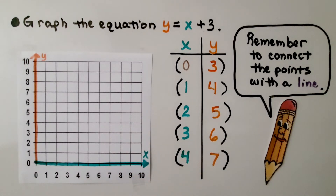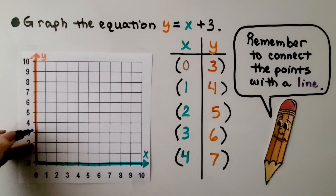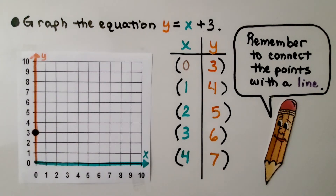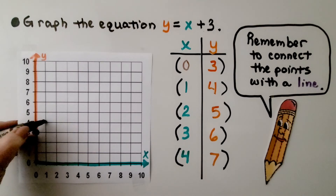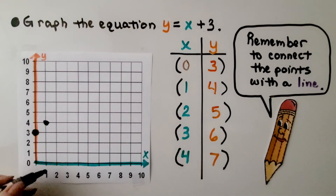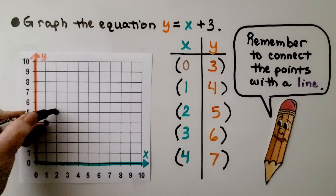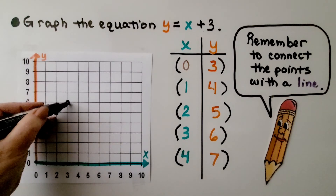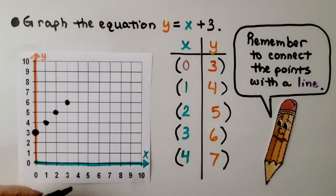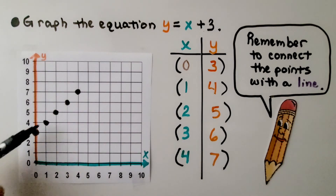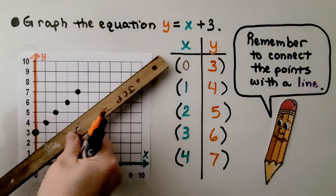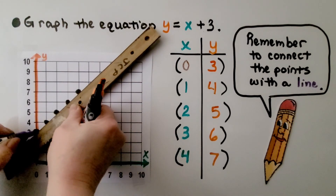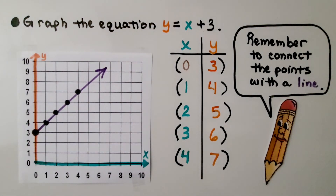We can plot these points. 0 for x and 3 for y is right here. Then 1 for x and 4 for y, right here. Then 2 for x and 5 for y, right here. Then 3 for x and 6 for y, here. And 4 for x and 7 for y, right here. We can already see the line forming. We connect the points with a line using a straight edge like a ruler, draw the line, give it an arrowhead, and that shows every location on the line is a solution of the equation.